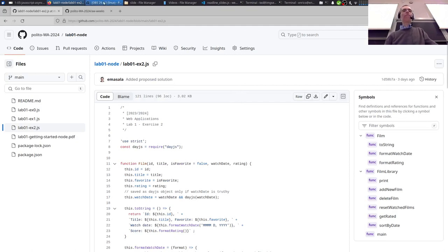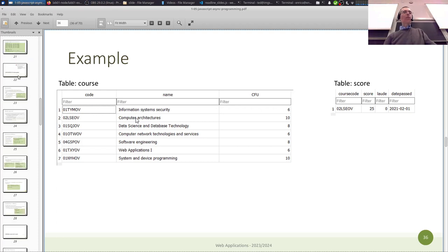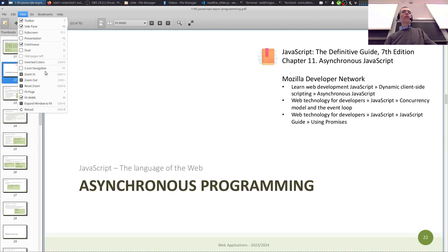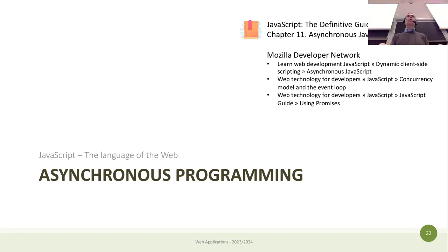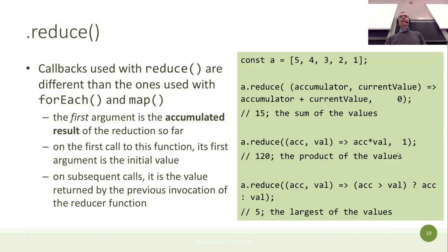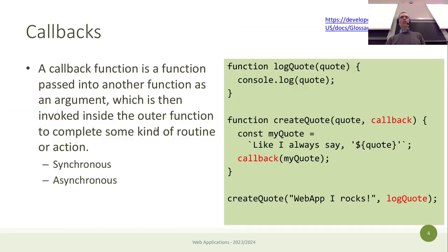I announced the lab solution on the Telegram channel — when I publish something important, I'll post it there. Today we will continue and finish talking about synchronous and asynchronous programming. We'll finish this set of slides. Last time we talked about callbacks and synchronous callbacks, where the program waits for the callback to complete. Today we'll cover asynchronous callbacks and asynchronous functions, which are more difficult.